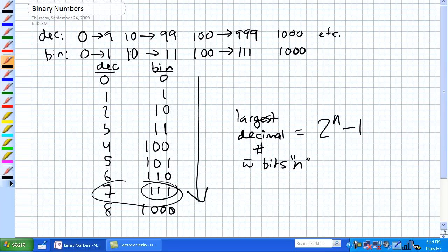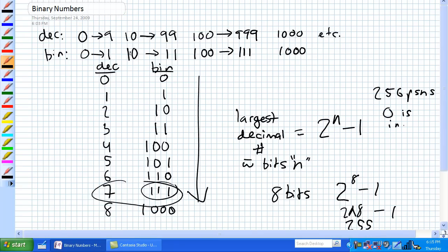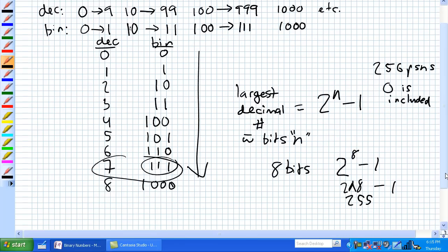It's two to the N minus one. So eight bits - what's the largest decimal number you can express with eight bits? Two to the eight minus one. You're going to get 255. But are there 255 positions? No, because there is a zero in there too. So there's 256 positions. A zero is included. But the maximum decimal number you can express is 255.